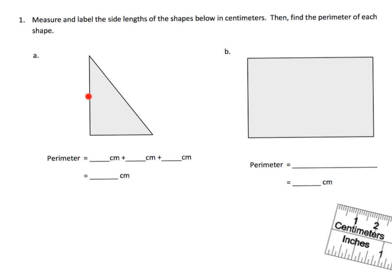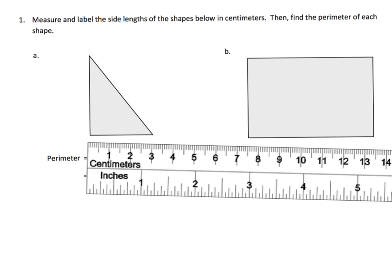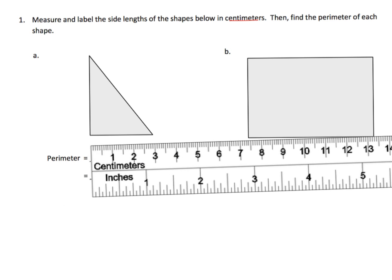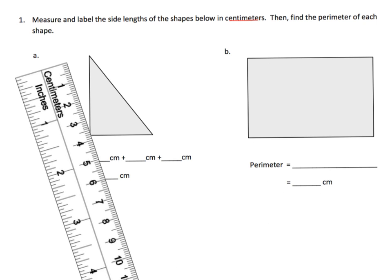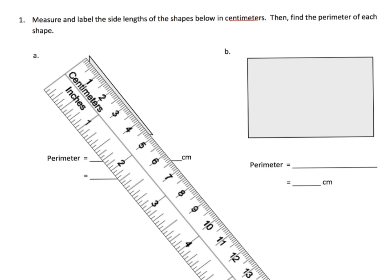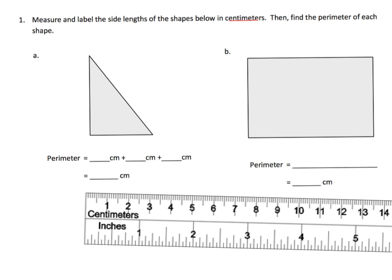Perimeter is where you trace your finger around the figure and find the total distance around it. To emphasize that, we use a ruler on the centimeter side. Measuring the triangle: this side is about 3, this is about 4, and this is about 5 — so 3 centimeters, 4 centimeters, and 5 centimeters for a total of 12 centimeters.